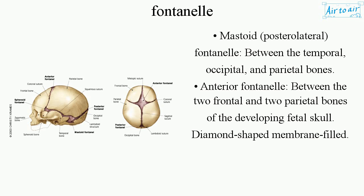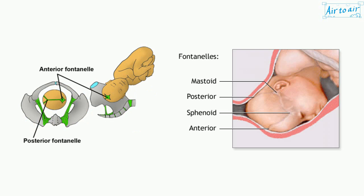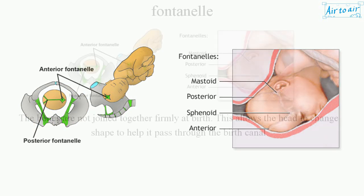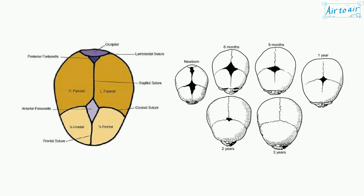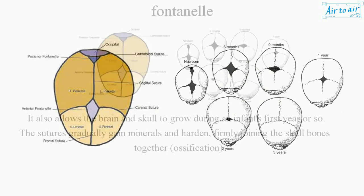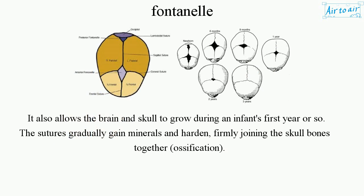The anterior fontanelle is diamond-shaped and membrane-filled. The bones are not joined together firmly at birth, which allows the head to change shape to help it pass through the birth canal. It also allows the brain and skull to grow during an infant's first year or so.